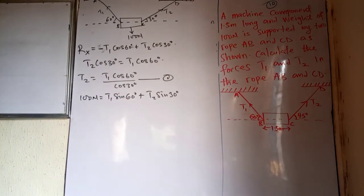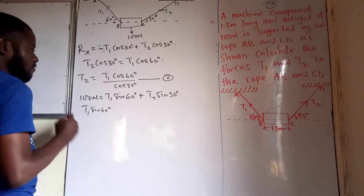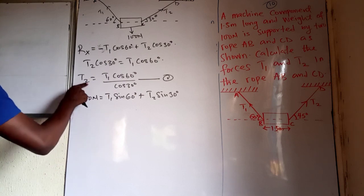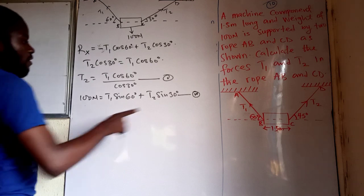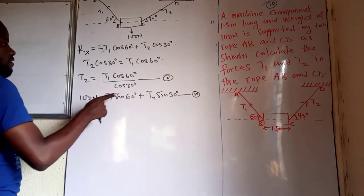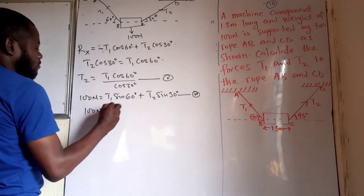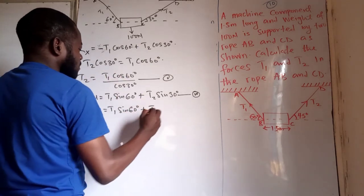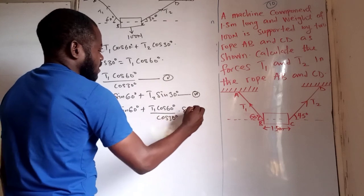From the horizontal equation, we get T2 equals T1 cos 60 divided by cos 30. I'll call this equation one and the vertical equation equation two. Substituting into equation two: 100 newtons equals T1 sine 60 plus, instead of T2, we substitute T1 cos 60 divided by cos 30.